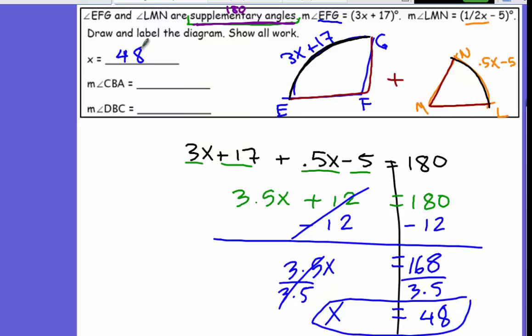Then we need to find the angles. So right here it's supposed to be EFG. Apologize, I didn't change the question. And this is supposed to be LMN. So EFG 3X, that's 3 times 48 plus 17. 161 degrees. And this is 19.